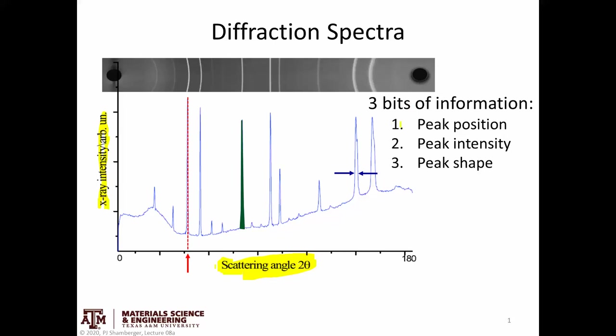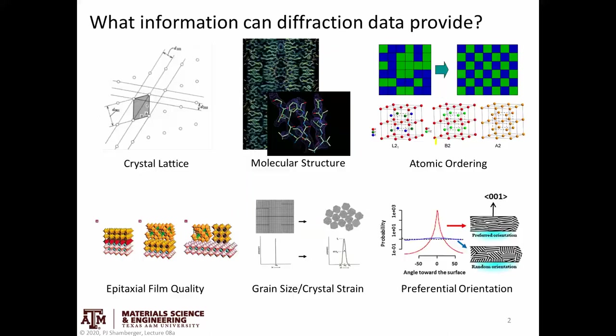From this we can get basically three kinds of information. We can get a peak position, so what two theta angle do I see intensity scattered at. I can get a peak intensity. Usually rather than just measuring a maximum number we integrate under a curve. So that's what this green line is showing. If you integrate under the peak you would get some integrated intensity. Then finally peak shape. So how broad is this? Is it symmetric? Is it asymmetric? There's some information that is hidden in the shape of the diffraction peak as well. So each of those three things tells you something different.